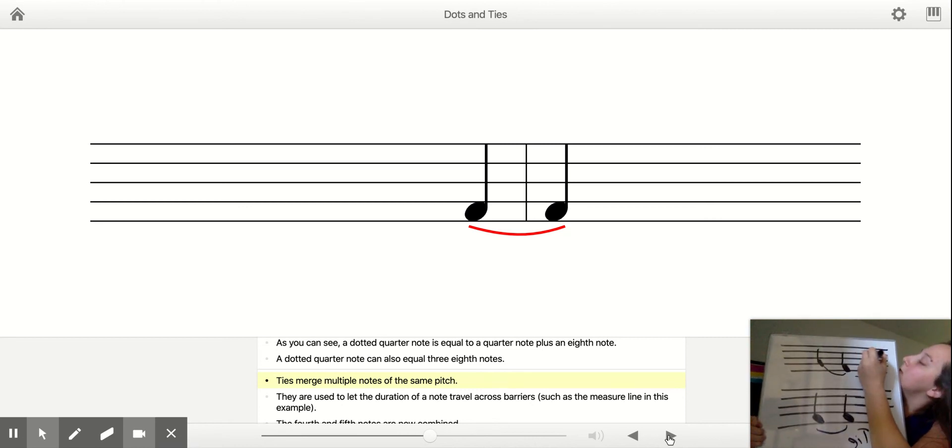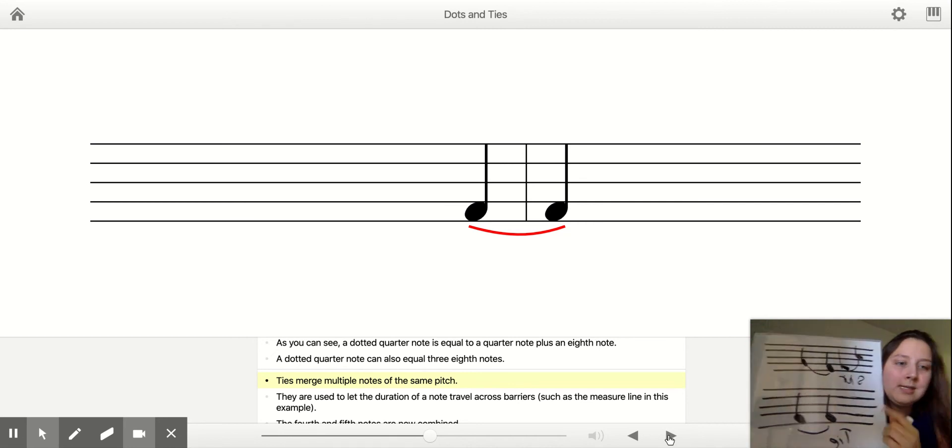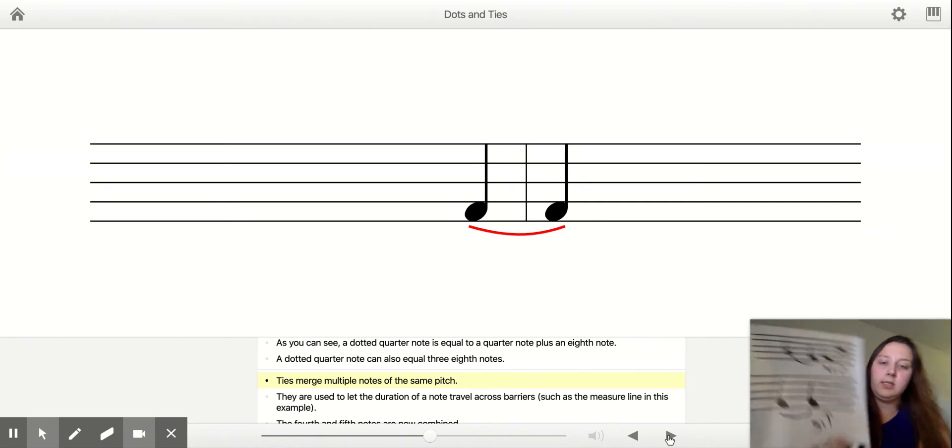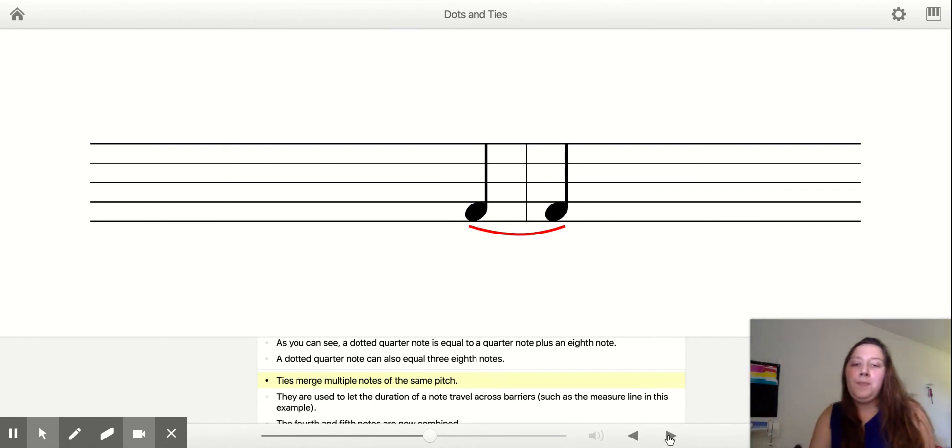I could also have a slur like this, on two different notes. Ties on the same note, slurs on a different note. So the tie connects two, or some notes, it doesn't have to be two, three or four or whatever, of the same pitch. Okay, so no note changes.